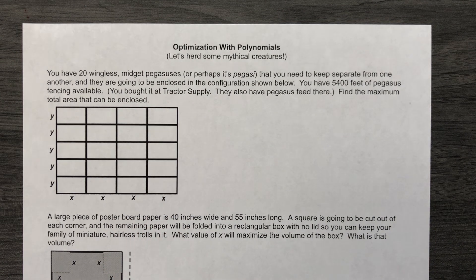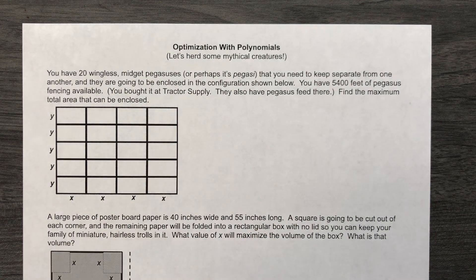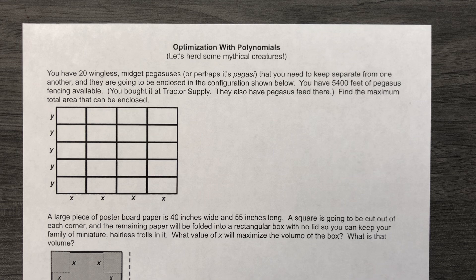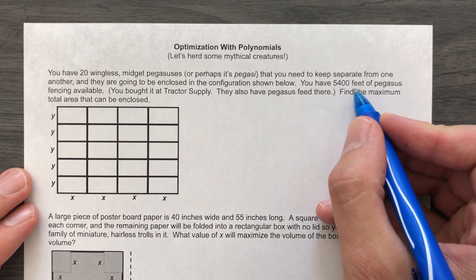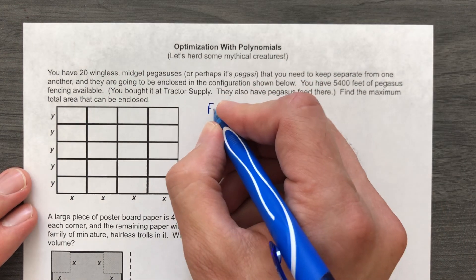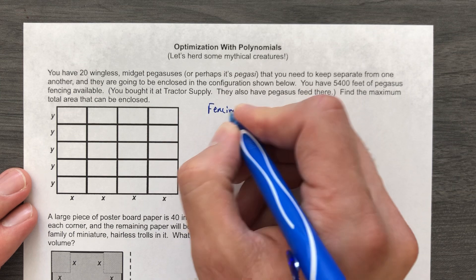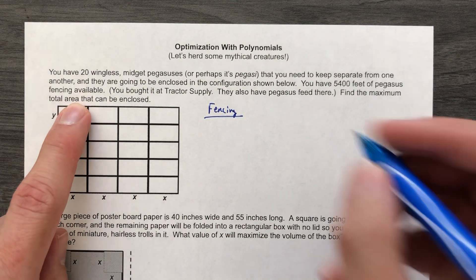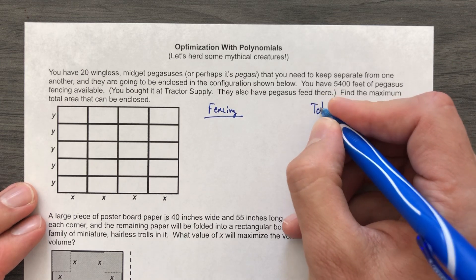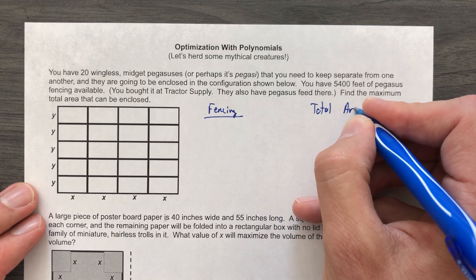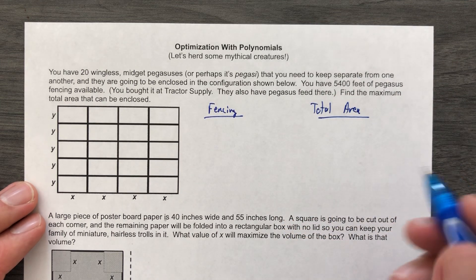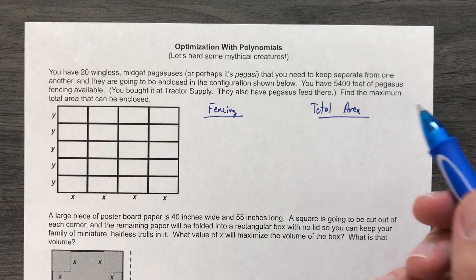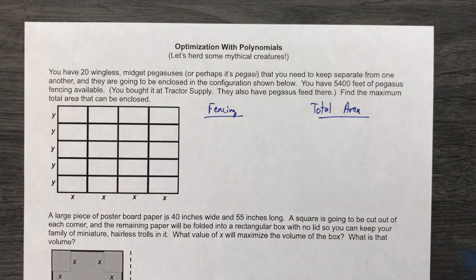So they are actually giving you two things, or they're giving you one thing that you do know. We know how many feet of Pegasus fencing there is, so I'm just gonna put fencing here. And then they're asking you about something and the thing they're asking is the total area. So I'm gonna put total area over here. So this is my strategy. I like to start with what they're asking me and I'm gonna be like, okay, well, what's the maximum total area?